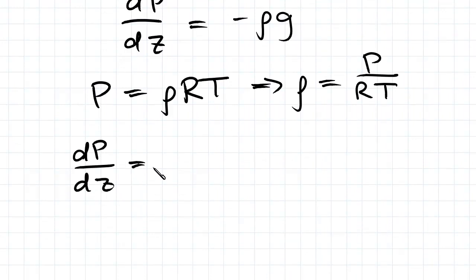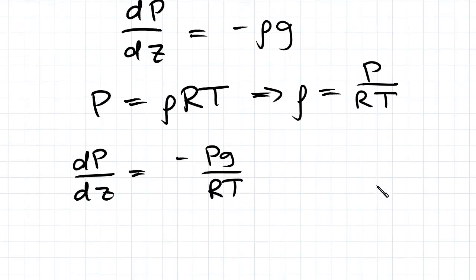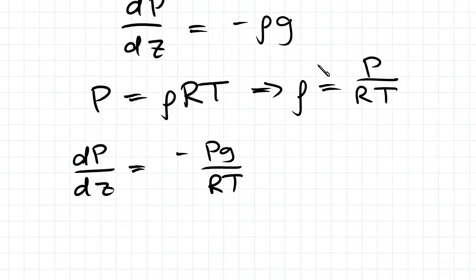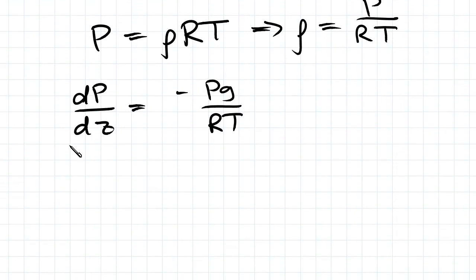dP on dz equals negative PG on RT. So we know that in this case, since P is a variable, R and T are constants, rho will also be a variable because as P varies, rho varies. So that's why we can just substitute it in, and we've treated rho as a variable. We can then integrate.